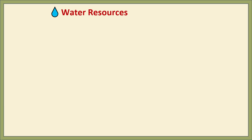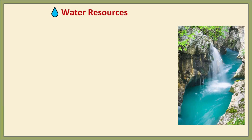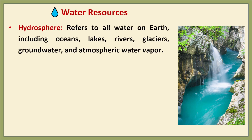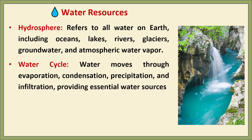Next we have water resources. Water covers nearly 71% of earth's surface and all of it together forms the hydrosphere. This includes oceans and seas, rivers and lakes, glaciers and ice caps, groundwater, and water vapour in the atmosphere. Water constantly circulates through the water cycle — it evaporates from the surface, condenses into clouds, falls as precipitation and infiltrates the ground. This cycle is essential for replenishing water sources.